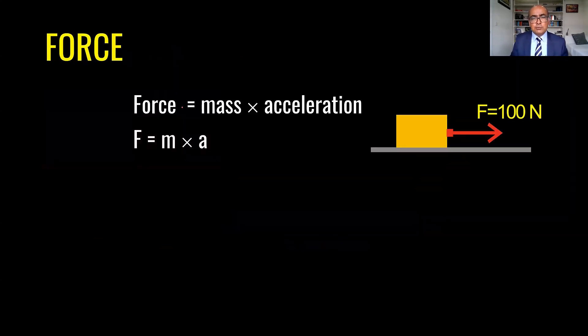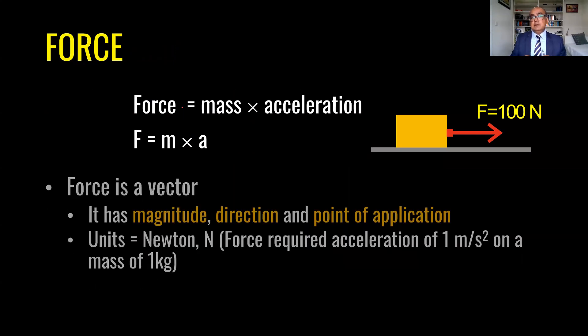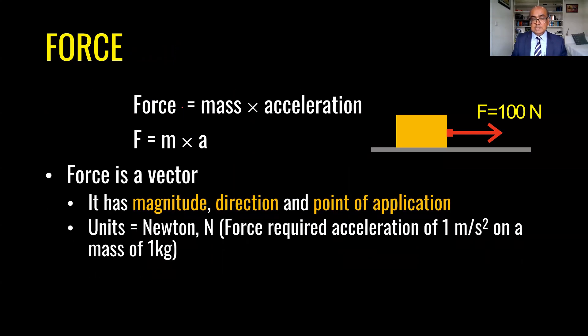What does it mean by force? Force is equal to mass into acceleration. The key thing to remember here is that force is a vector. It has magnitude, it has direction, it has point of application. And the units of force are newton which means that force required for acceleration of one meter per second square on a mass of one kg.